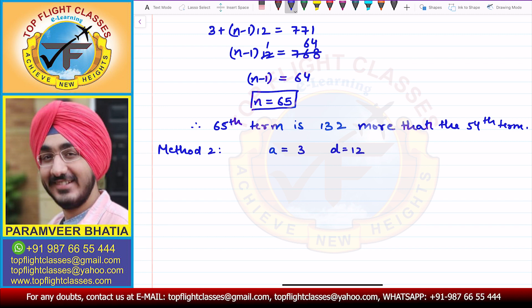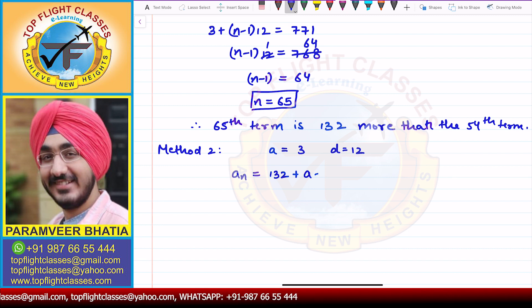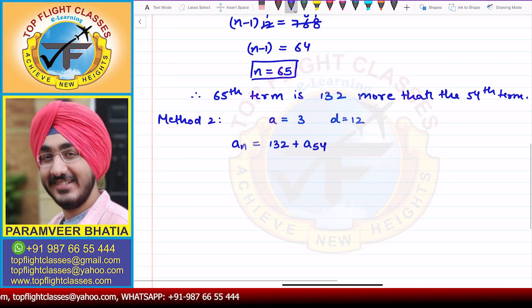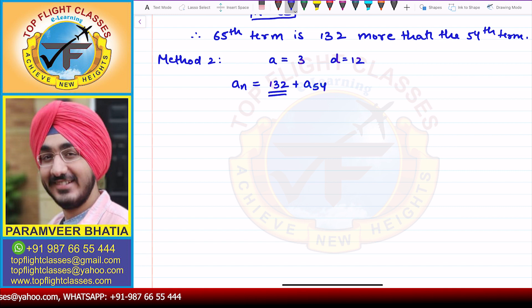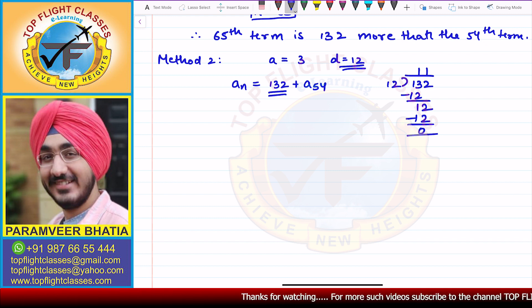In the question, we have to find a term which is 132 more than the 54th term. Now, if we see 132 and divide by 12, we get 11 with no remainder. That means I can write 132 as 12 into 11, and 132 is fully divisible by 12.